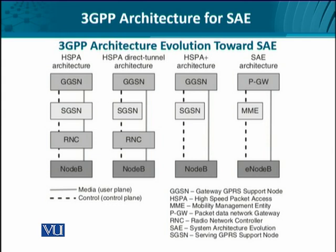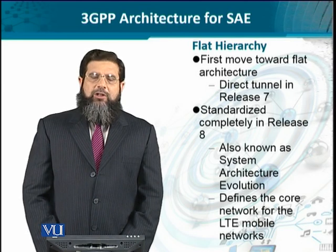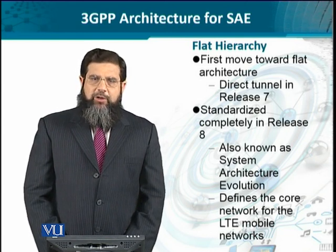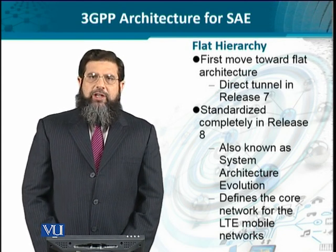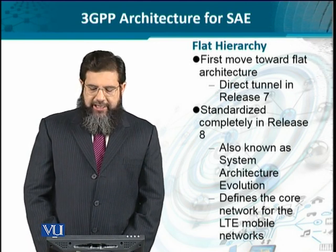Moving on, the RNC was deprecated in Release 8 onwards — we just see SGSN and GGSN connected to Node B. Then in the system architecture evolution, the SGSN was subsumed into the evolved packet core, replaced by the mobility management entity and the packet data network gateway. This flatter hierarchy came as a natural consequence, with the first move being the direct tunnel in Release 7. This SAE with the MME defines today's network.